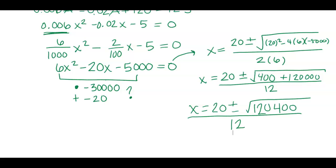I get x = (20 ± √120,400) / 12. When I take the square root of this piece right here, I end up getting 346 or about 347.